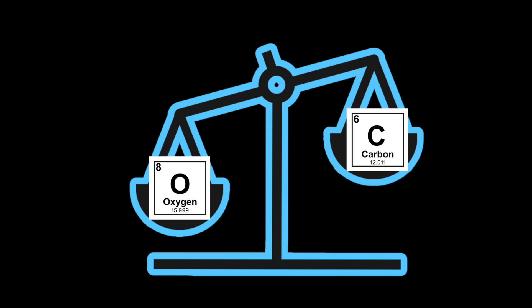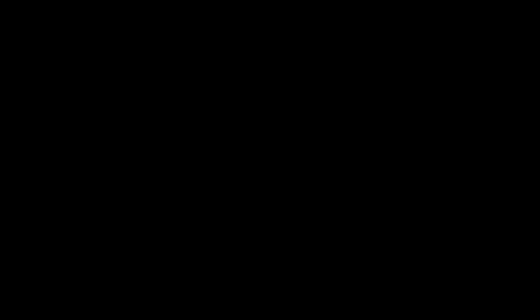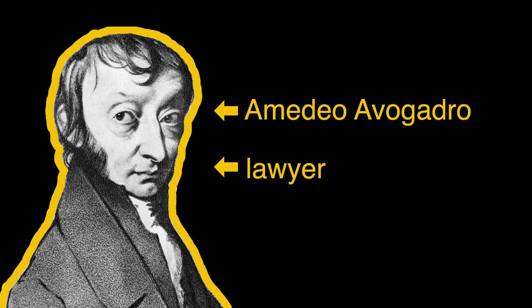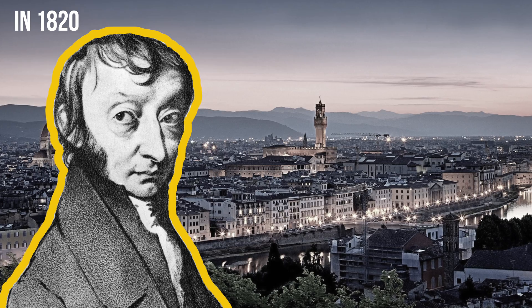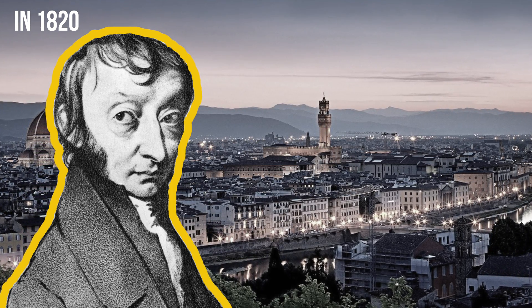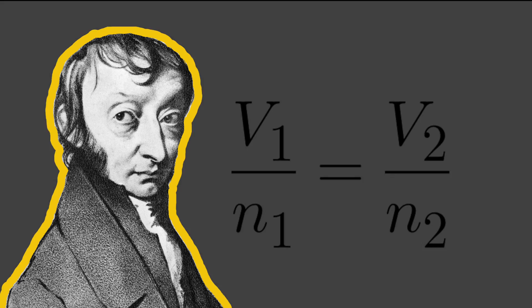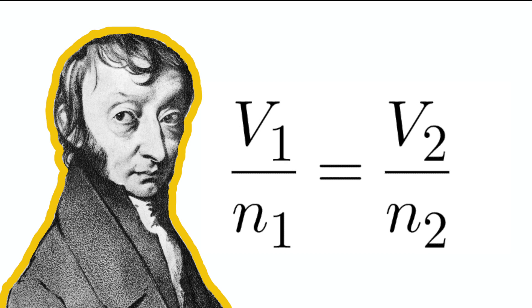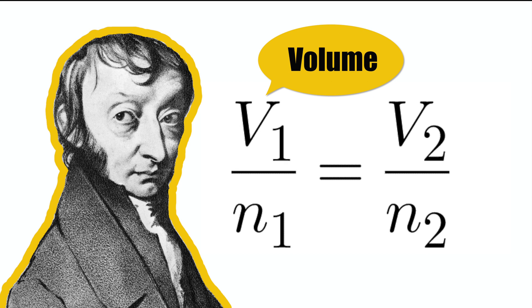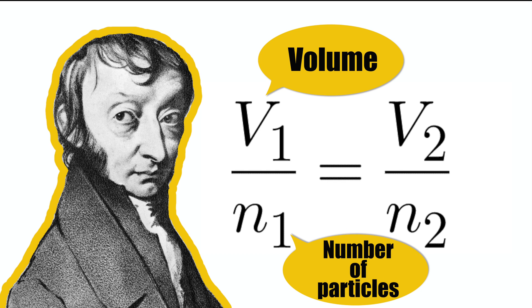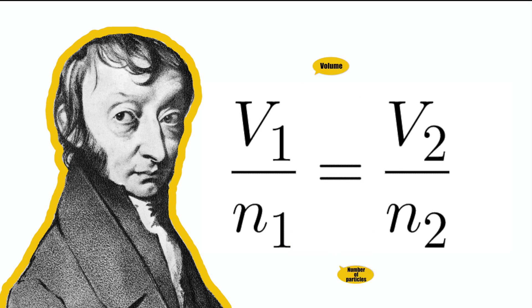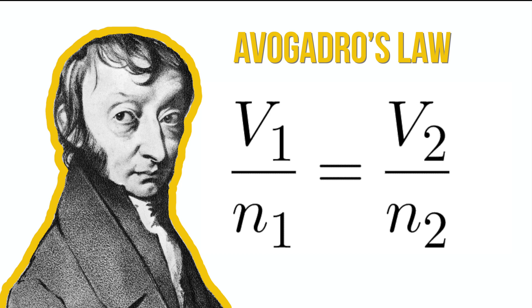On a side note, did you know that Avogadro's number was not discovered by Avogadro? Amedeo Avogadro was a lawyer who became interested in mathematics and physics. In 1820, he became the first professor of physics in Italy. Avogadro is most famous for his hypothesis that equal volumes of different gases at the same temperature and pressure contain the same number of particles. This is called Avogadro's law. This hypothesis was useful in determining atomic and molecular weights, which led to the concept of the mole.